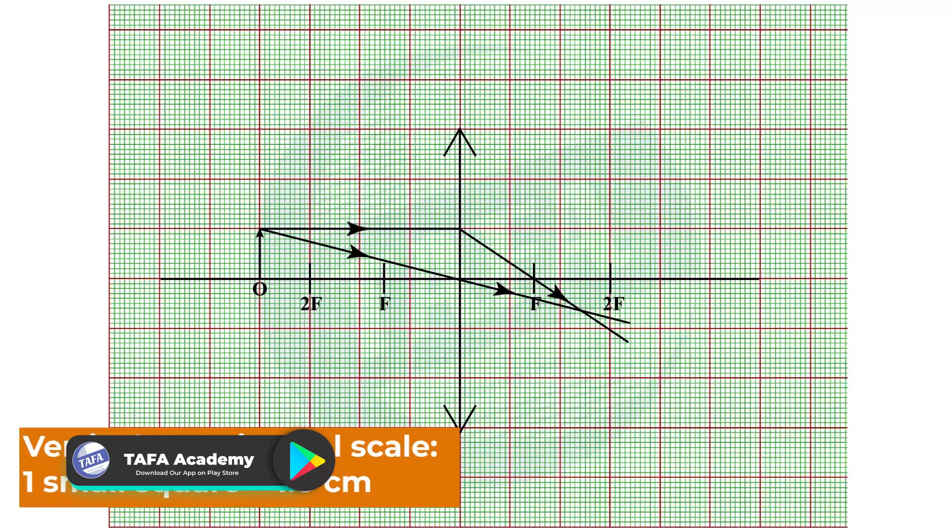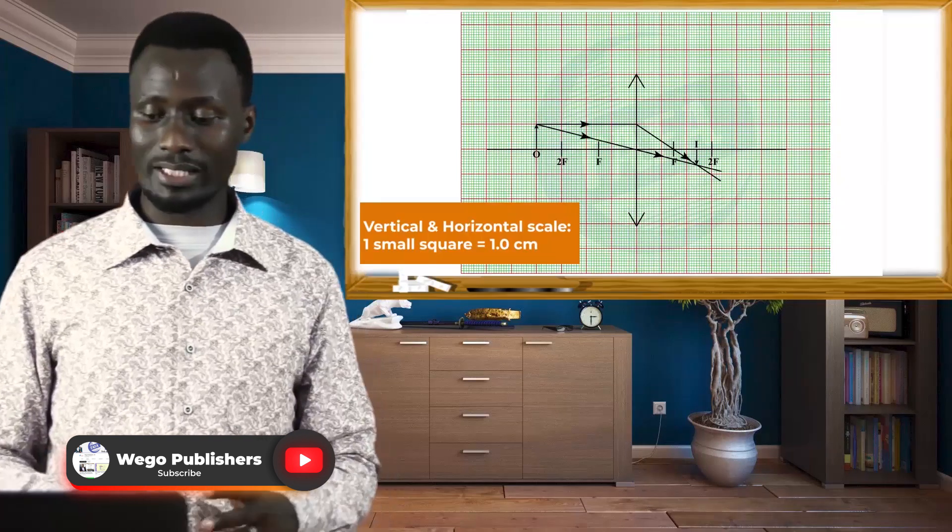Now this is followed by joining the tip of the image to the principal axis perpendicularly using a continuous line, and then you indicate the arrowhead.